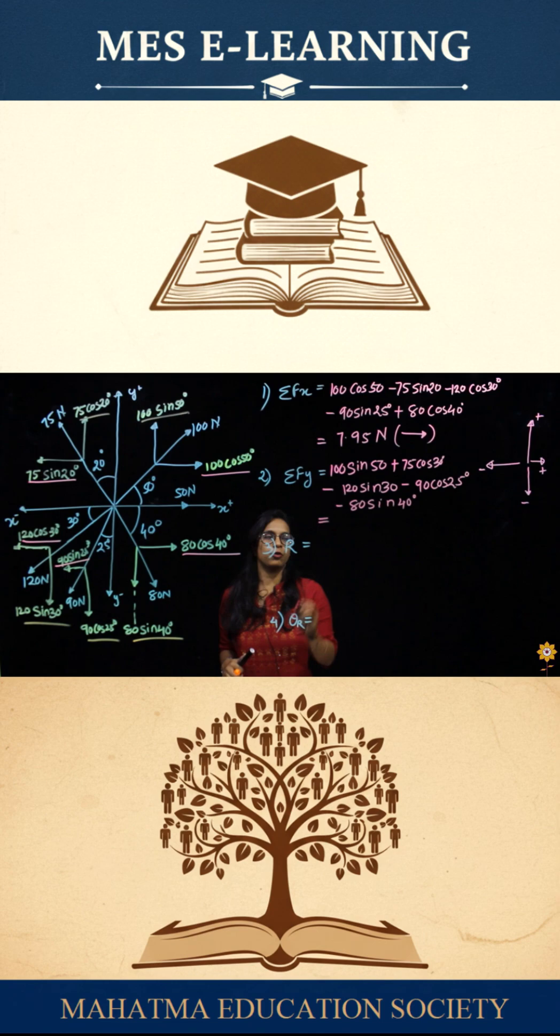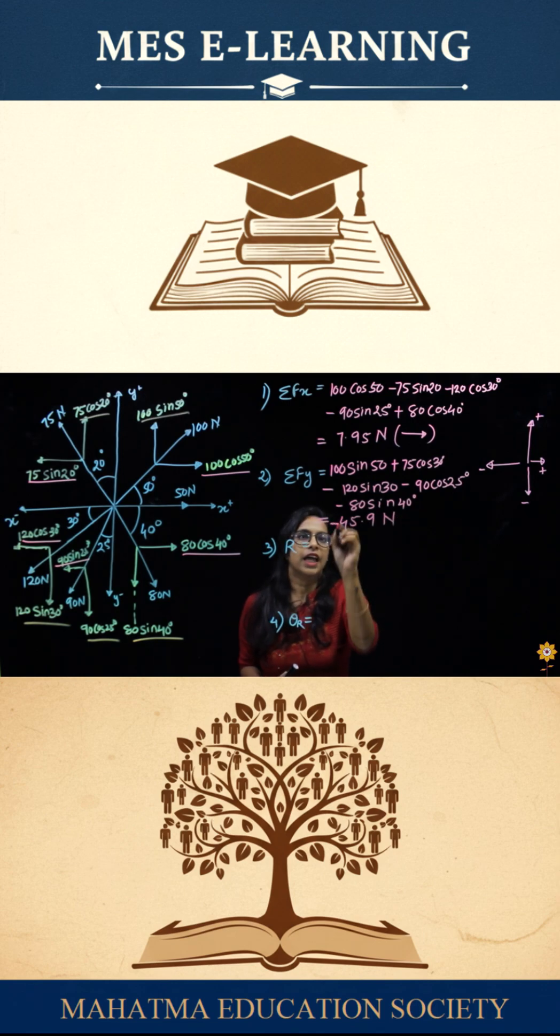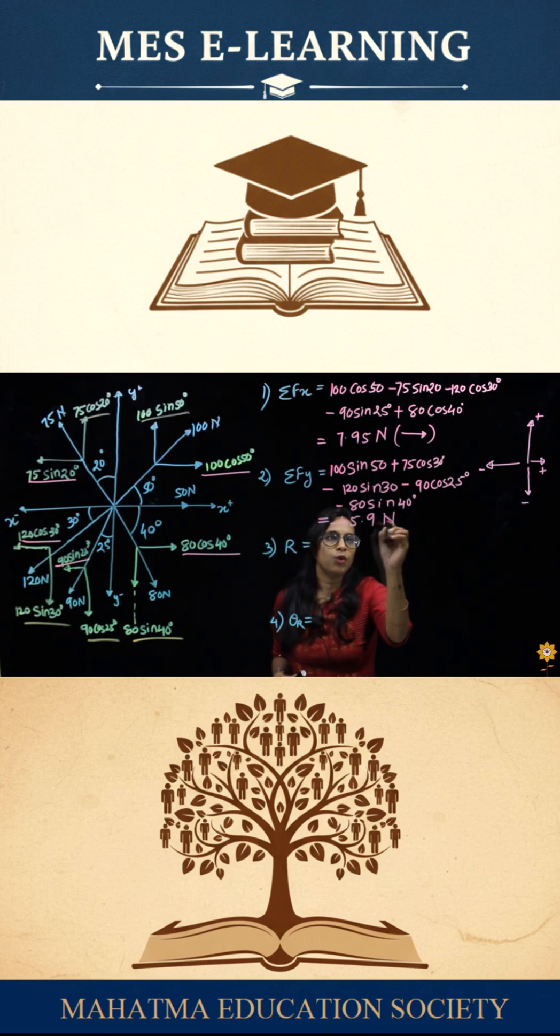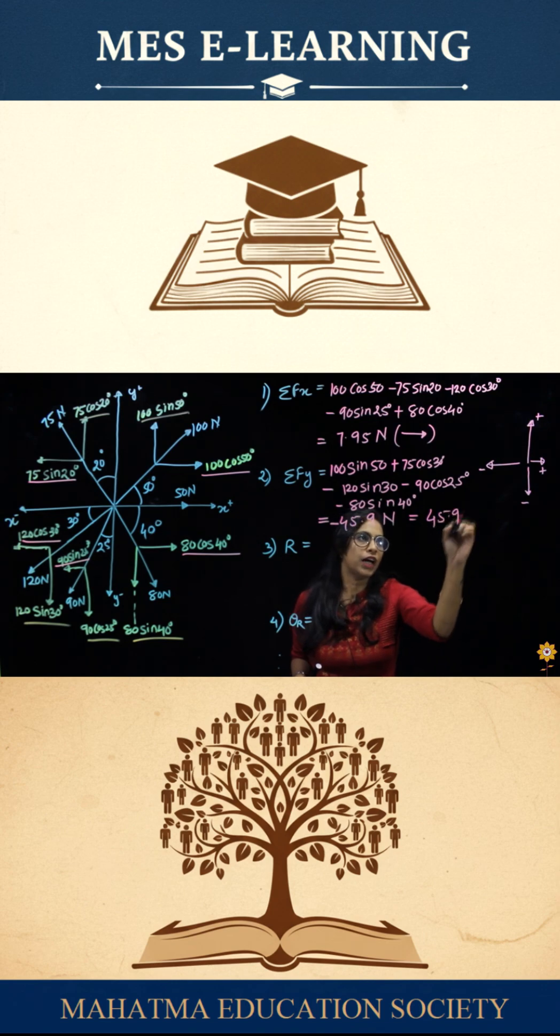Now, if we calculate this, we would get the value as negative 45.9 newtons. So if you get a negative value in the calculation of f of x or f of y, any value, then we can directly write it with the opposite direction. It would become 45.9 newtons in the downward direction.